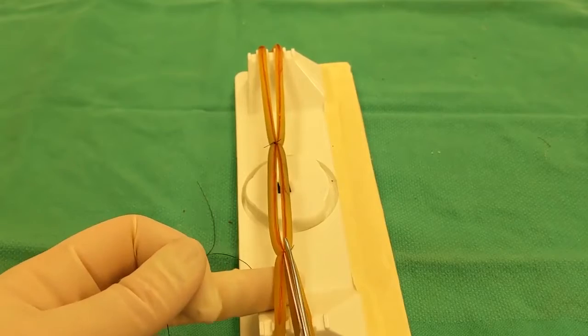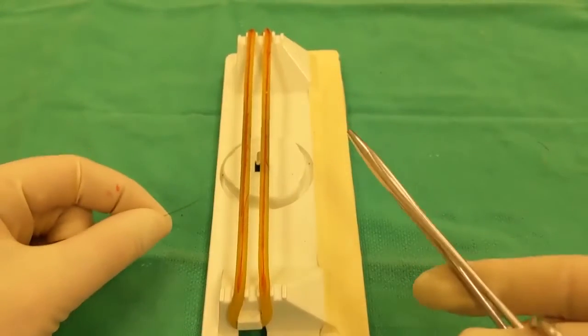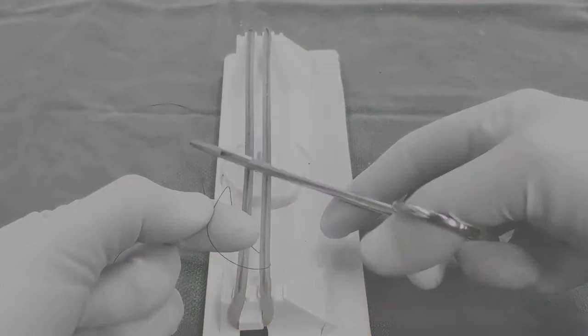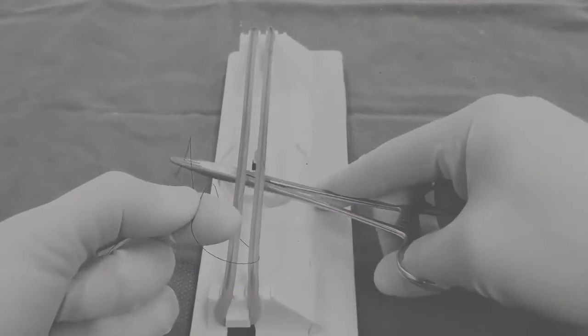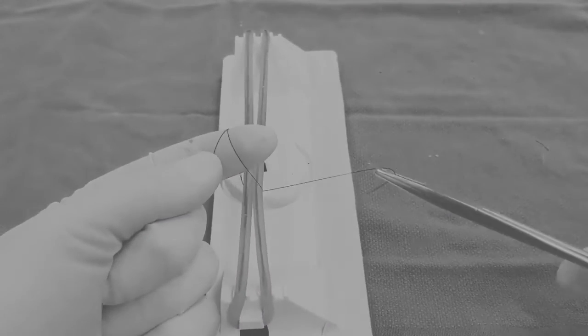Now we'll move on to friction knots, which provide the most secure ligation when performed correctly. Friction knots wrap around the pedicle twice before knot formation, which dramatically increases the friction between strands and improves ligature security.